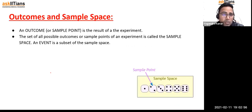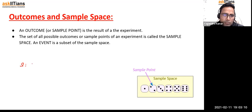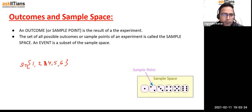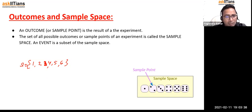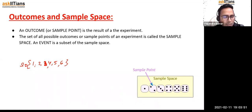An outcome is one element from the full sample space. If I'm throwing a die, getting 6 is one outcome. The full sample space is 1, 2, 3, 4, 5, and 6. If I get any number like 2 or 4, that is one outcome. The full set is the sample space; an event is a subset of the sample space. The notation S represents the sample set containing all possible outcomes. Each listed possibility is a sample point.